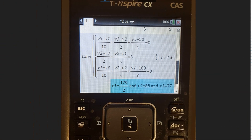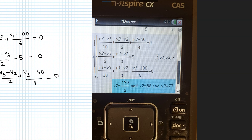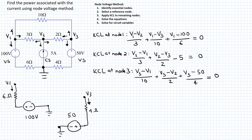We can use a calculator to solve these equations. Using the solve command with variables V1, V2, and V3, the equations are entered directly. The solution is V1 = 89.5 volts, V2 = 88 volts, and V3 = 77 volts. This completes step 4, solving the equations.